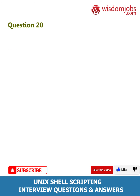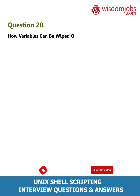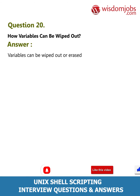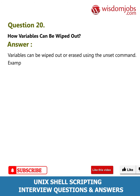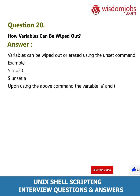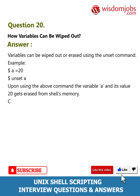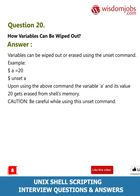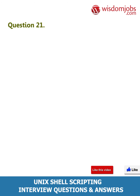Question 20: How can variables be wiped out? Answer: Variables can be wiped out or erased using the 'unset' command. Example: a=20, then 'unset a' — upon using the above command, the variable 'a' and its value 20 get erased from the shell's memory. Caution: be careful while using the unset command.